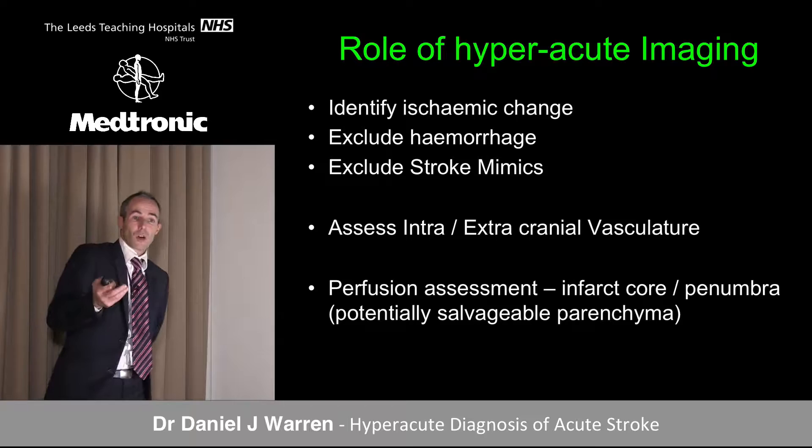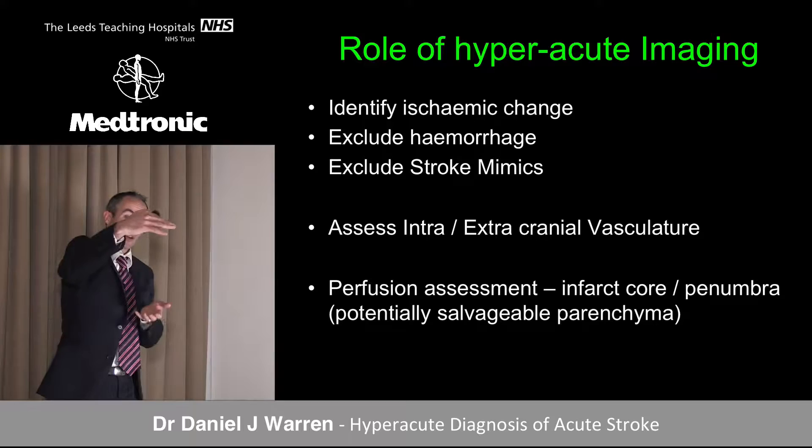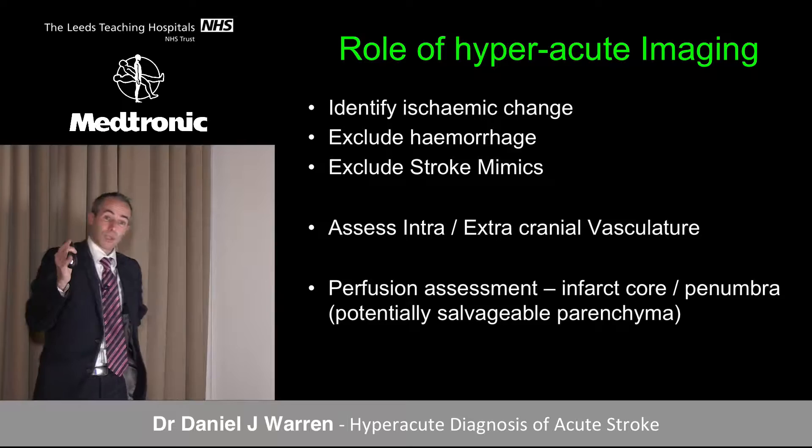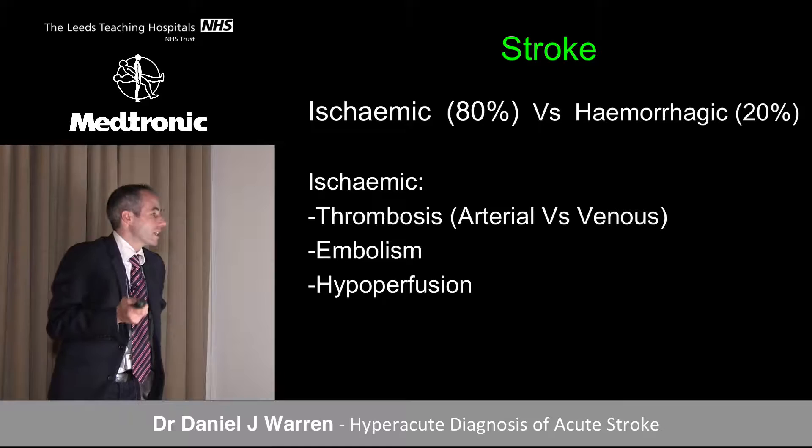Imaging allows us to assess the intra- and extracranial arterial vasculature, and also we can do perfusion imaging. We can look at the at-risk area of brain parenchyma, the infarct core, and also the potentially salvageable area of the penumbra.